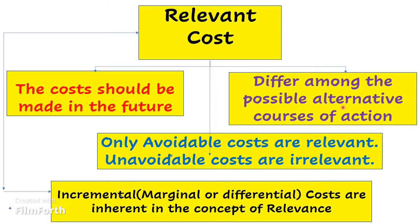Third, only avoidable costs are relevant. For example, suppose you plan to pursue higher education — if you go ahead, there will be extra expenditure; if you don't, there will be no expenditure. That cost is avoidable, so it is relevant. If you don't go for higher education, you can avoid that cost entirely.